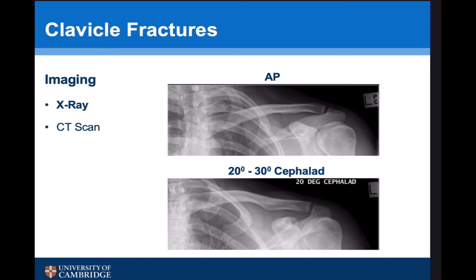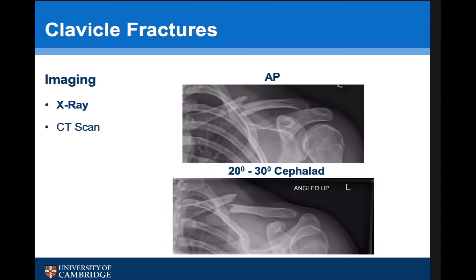With imaging, the vast majority of clavicle fractures can be managed just with X-rays. It's important to appreciate the difference between an AP view and a 20 to 30 degree cephalad view. The cephalad view gives a much better appreciation of the sigmoid curve to the clavicle and a much truer representation of the displacement. Looking at these same fractures, the cephalad view shows the fracture is more displaced and gives a better idea of potential posterior displacement.